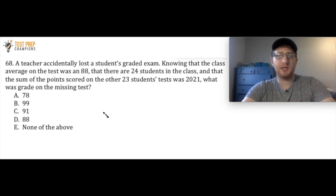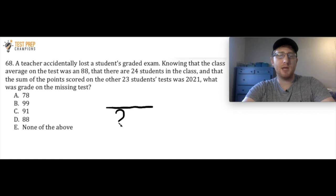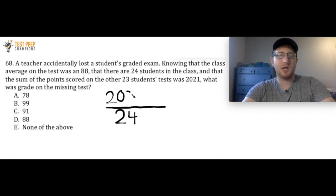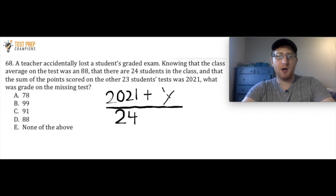Okay, a lot of people find this type of question confusing, so let me explain. To calculate the average or mean, you add up all the test scores and divide by the total number of students — in this case 24. The top of our fraction is the sum of every score. For 23 of the students, the sum was 2021, but we don't know the missing student's grade, so I'll use the variable x. We also know the class average was 88, so the whole expression equals 88.